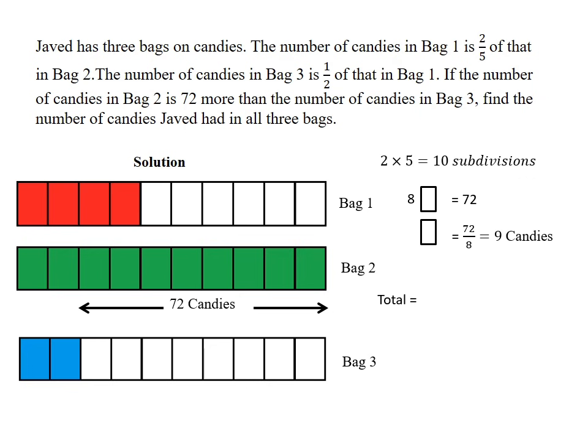Because each portion represents nine candies. So we multiply nine times ten to give me the total amount of candies represented in bag two. Then we add that to nine times four because this represents the total amount of candies in bag one. Then we add that to nine times two, which represents the total amount of candies in bag three. This would give us a grand total of 90 plus 36 plus 18, which is 144. We can therefore conclude that the total number of candies Javed had in all three bags was 144.